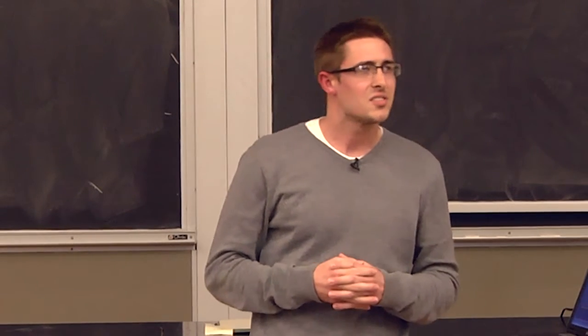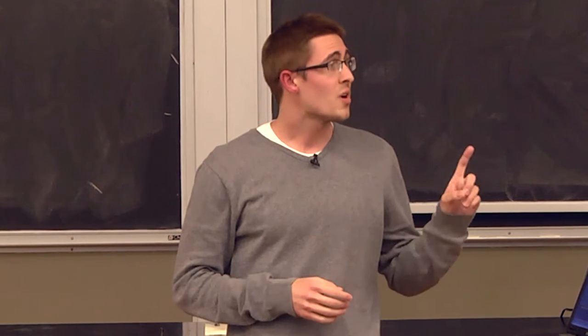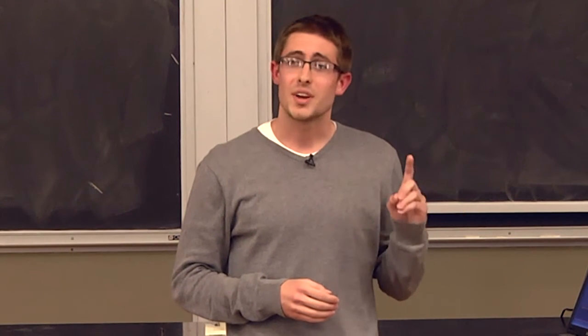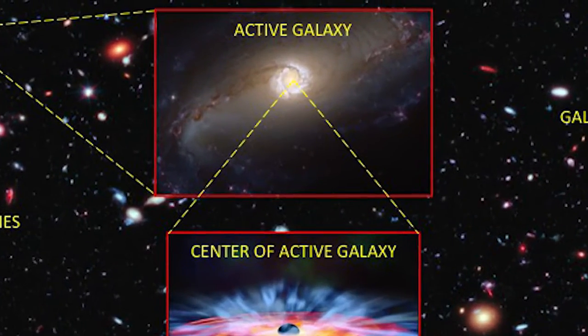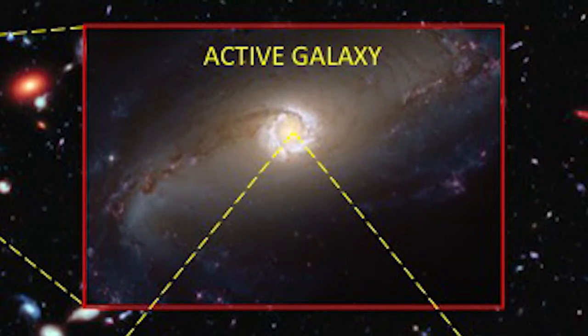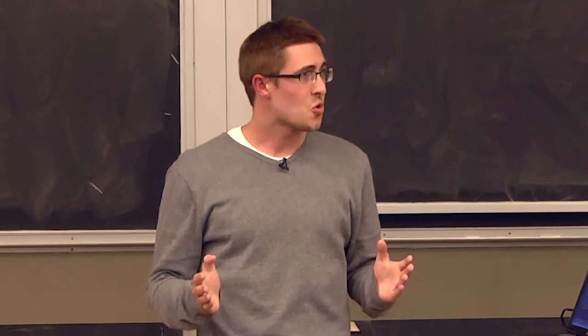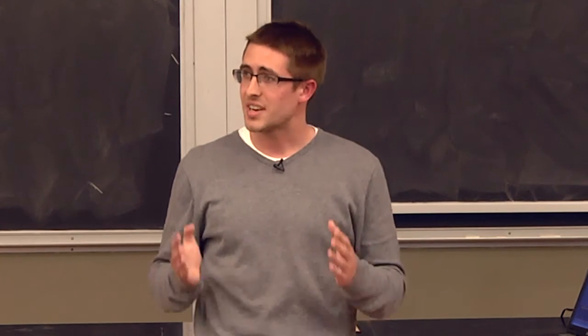How does a galaxy change its appearance? One way a galaxy changes is by going through an active phase. Here is a picture of an active galaxy, and you can see a bright light in the center. This light has about the same brightness as 100 billion suns. What is causing so much light to come out of the center of an active galaxy?